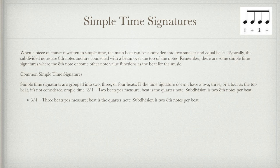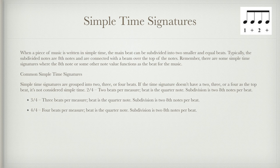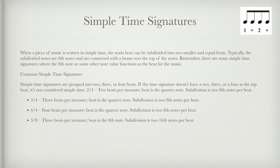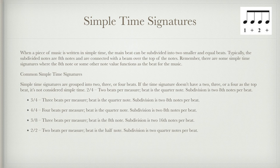In 3/4, there are three beats per measure; the beat is a quarter note and the subdivision is two eighth notes per beat. In 3/8, there are three beats per measure; the beat is the eighth note and the subdivision is two sixteenth notes per beat. Three-eight time often confuses people who think it's compound, but it's classified as simple. In 2/2, there are two beats per measure; the beat is a half note and the subdivision is two quarter notes per beat.